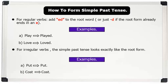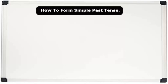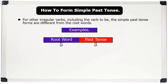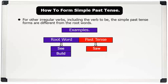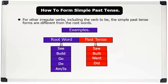3. For other irregular verbs, including the verb 'to be', the simple past tense forms are different from the root words. Examples: Root word 'go' — past tense 'went'. Root word 'do' — past tense 'did'. Root word 'am' or 'is' — past tense 'was' or 'were'.